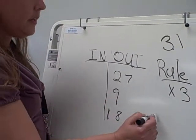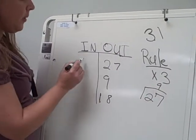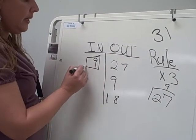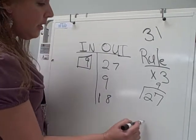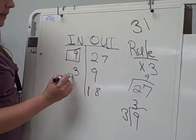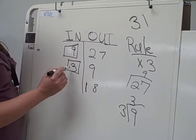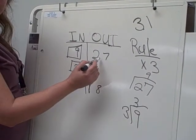So 27 divided by 3 is 9. So our in will be 9. To find the answer to 9 on the out, 9 divided by 3 is 3. So our in will be 3. Because 3 times 3 equals 9. 9 times 3 equals 27.